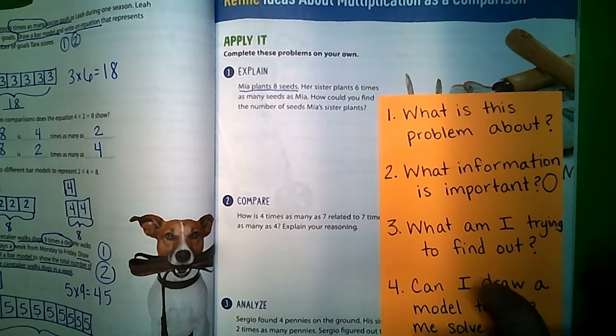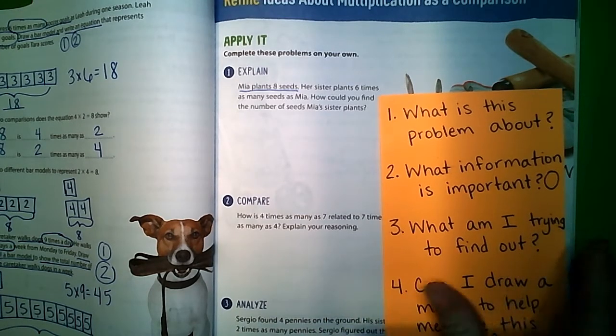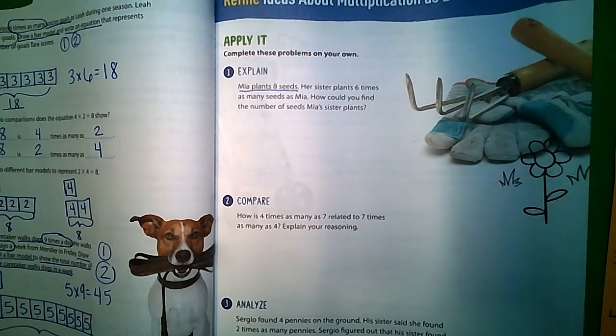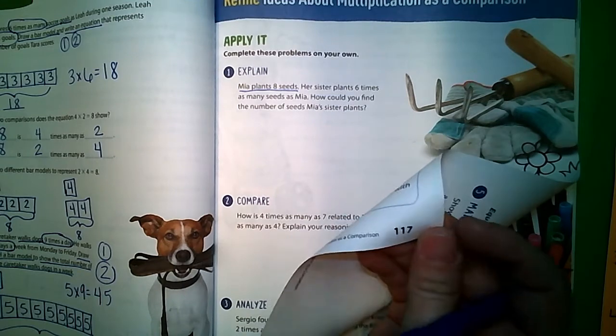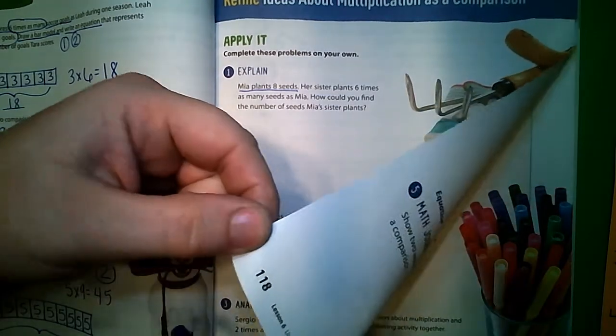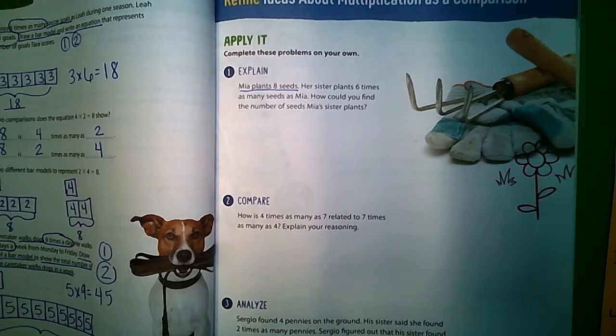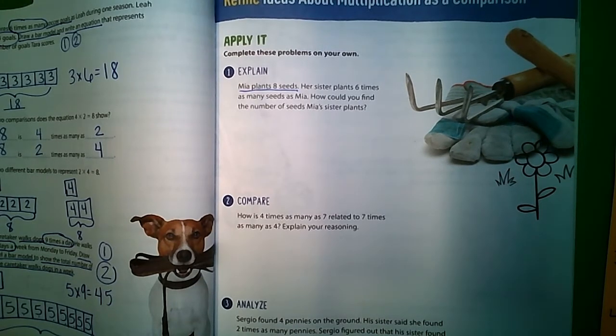Alright students, this is lesson six on multiplication as a comparison, pages 117 and 118. You should pause this video and go complete pages 117 and 118 in your math book first.